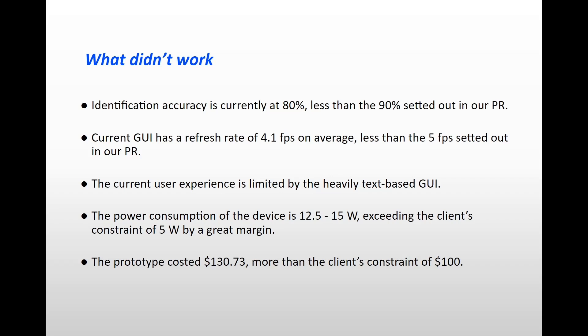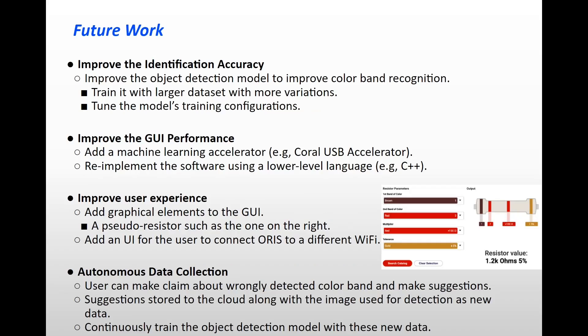Finally, the ORIS prototype failed to meet the initial cost constraint, which is no more than $100 as its initial cost is $130 for the current prototype. Again, a customized circuit board can be designed and developed to lower the cost of the ORIS to solve this issue. Next, let's move on to future work.